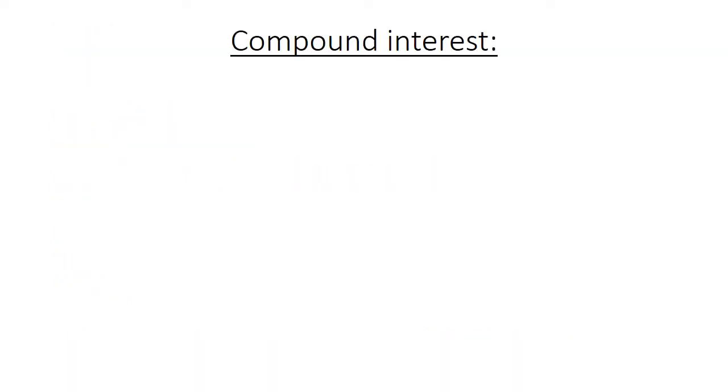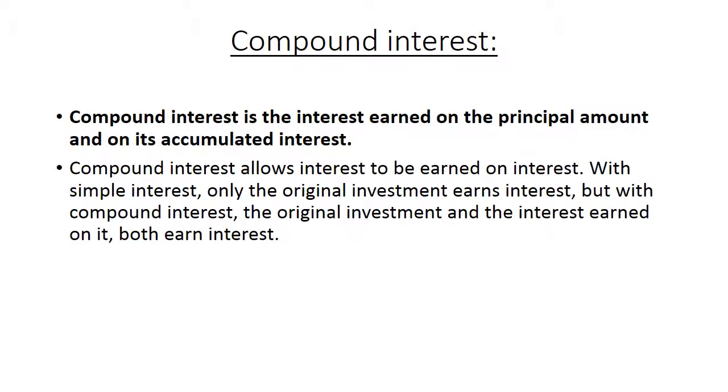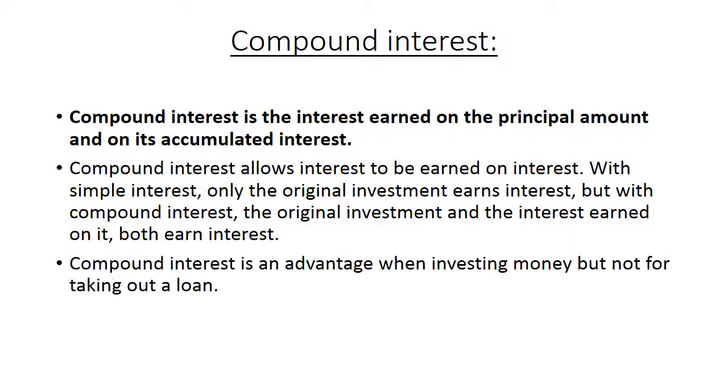Compound interest. Compound interest is the interest earned on the principal amount and on its accumulated interest. Compound interest allows interest to be earned on interest. With simple interest only the original investment earns interest, but with compound interest the original investment and the interest earned on it both earn interest. Compound interest is an advantage when you are investing money but not for taking out a loan.